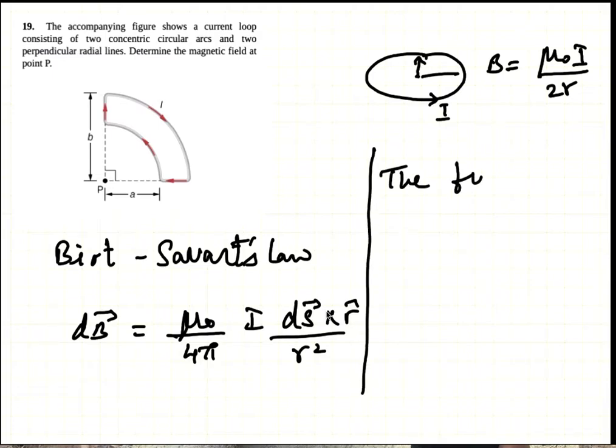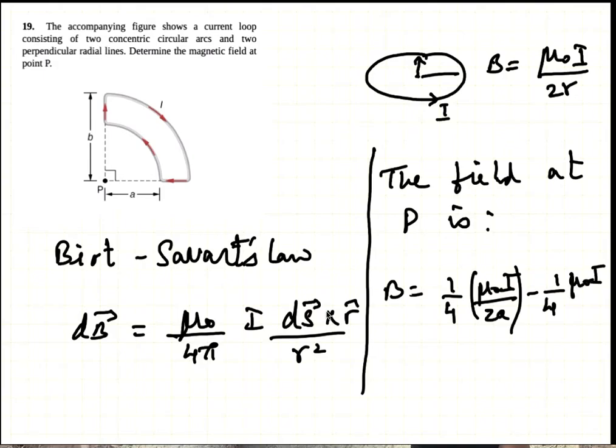So in summary, the field at P is... this current will produce a stronger field which is coming out of the paper. This is a weaker field going into the paper. So the net field is coming out of the paper, and it's equal to one-fourth μ₀I/2a minus one-fourth μ₀I/2b.